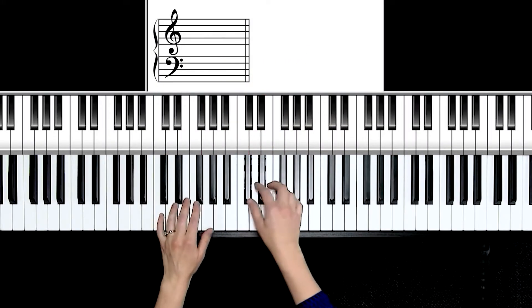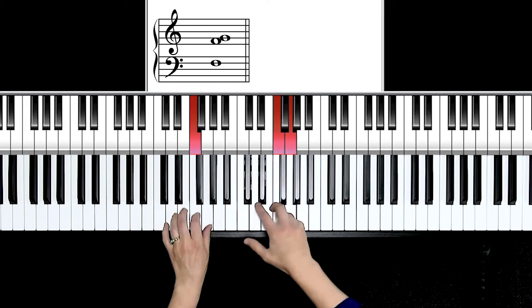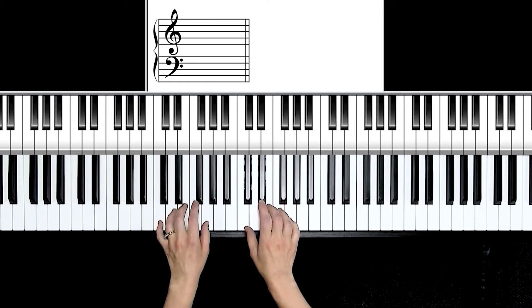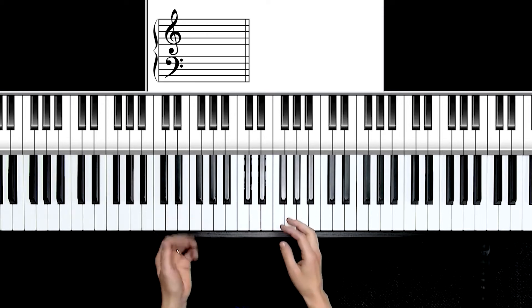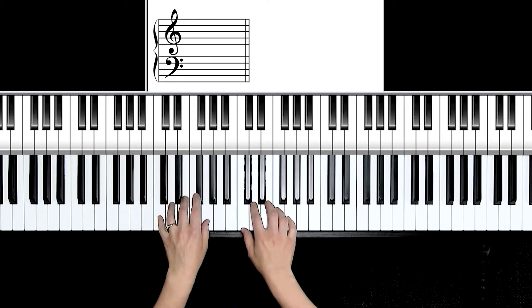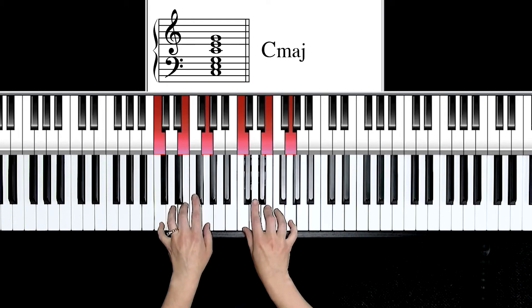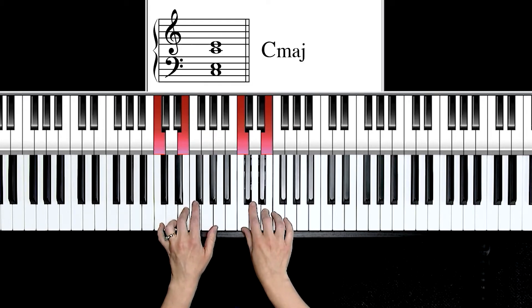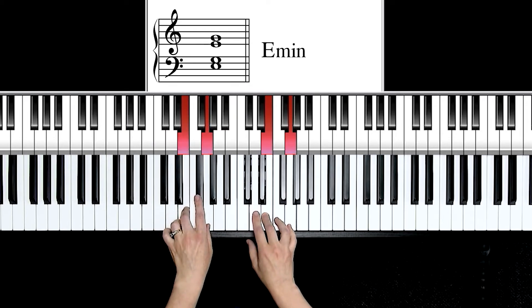We've learned how to build our major and minor triads from our major five finger scales, but we didn't really talk yet about the half step patterns within the actual triads themselves. So with me, find your C major triad, which is a familiar spot we've been going to. This is built up of a major third on the bottom, C to E, and a minor third on the top.